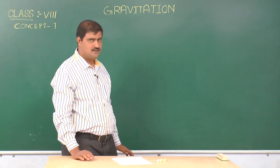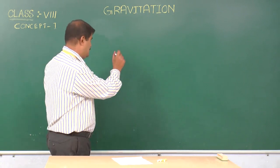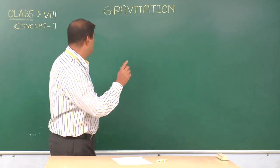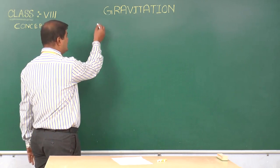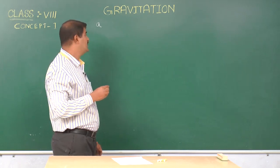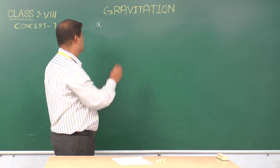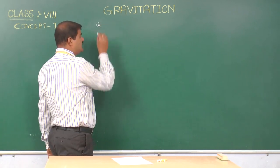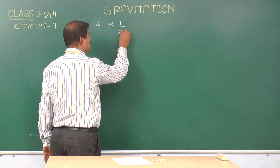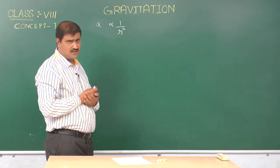In the last class we learned how the acceleration of the moon varies. According to Newton, the acceleration of the moon is inversely proportional to the square of the distance of the moon from the center of the earth. If A is the acceleration of the moon and R is the distance of the moon from the center of the earth,